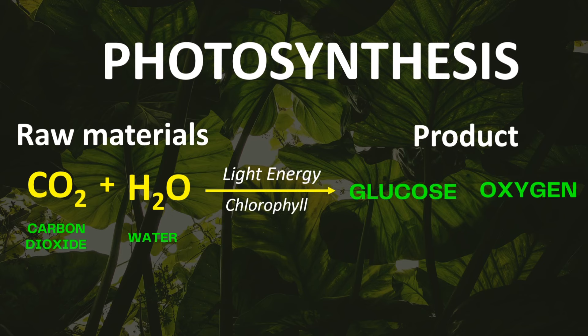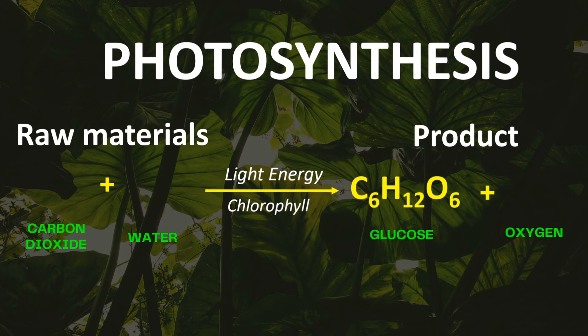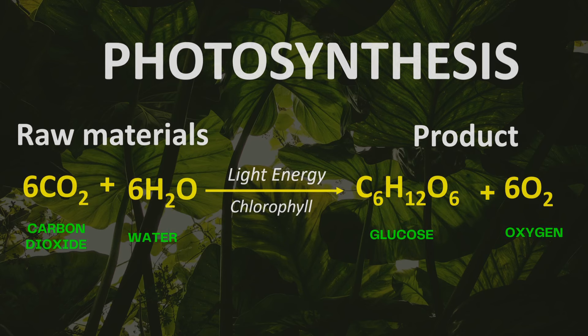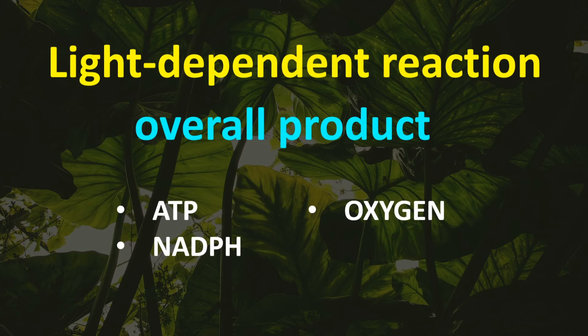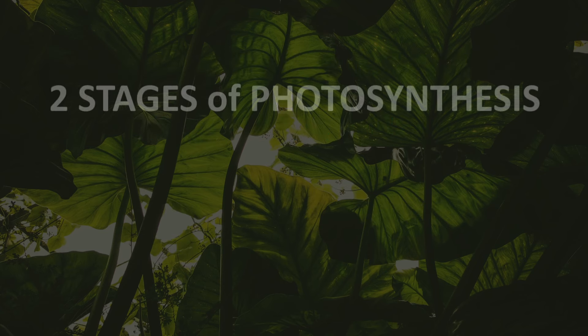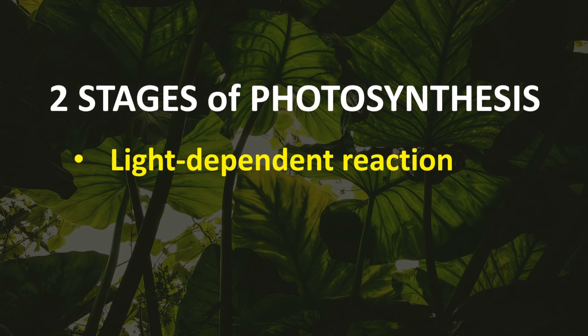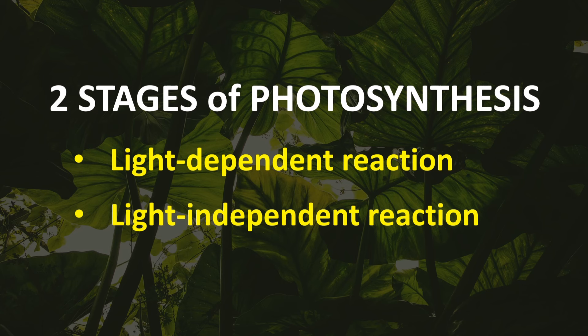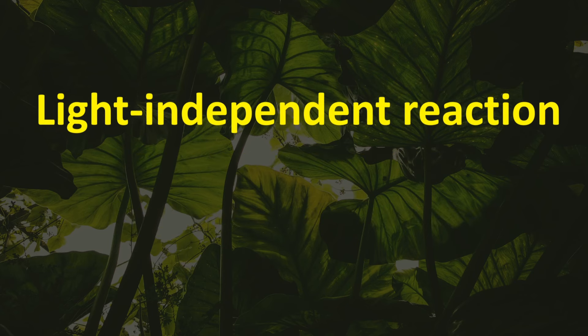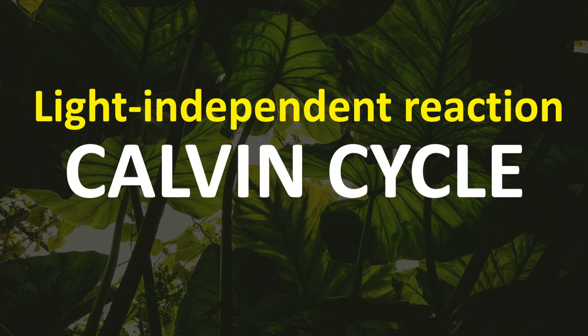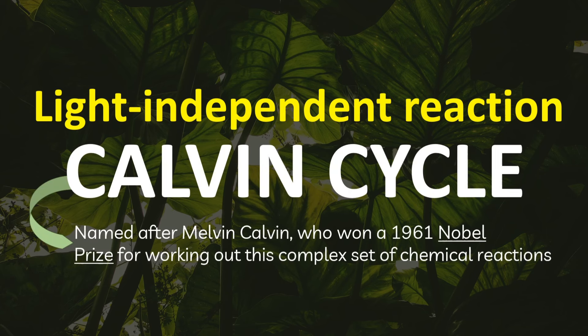forms glucose and oxygen. The overall products of the light-dependent reaction are ATP, NADPH, and oxygen. There are two stages of photosynthesis: the light-dependent reaction and the light-independent reaction. We already discussed the light-dependent reaction in our previous video. For this video we're going to talk about the light-independent reaction, or what we call the Calvin Cycle.